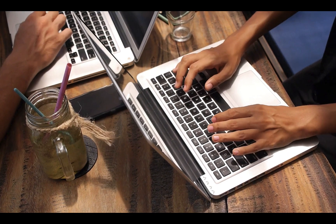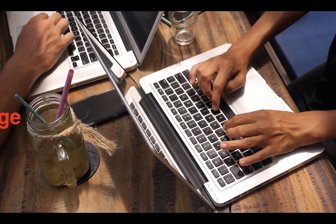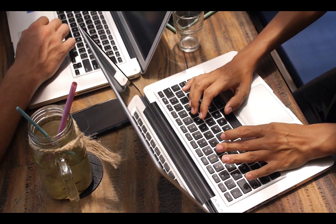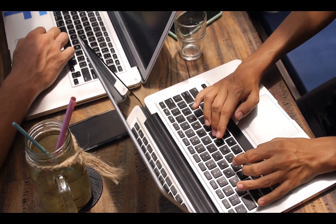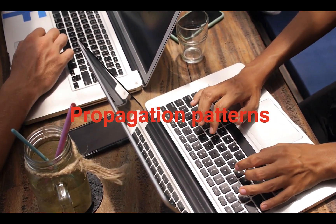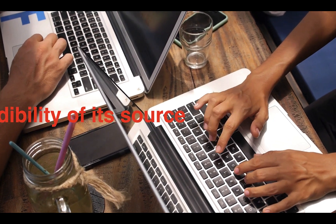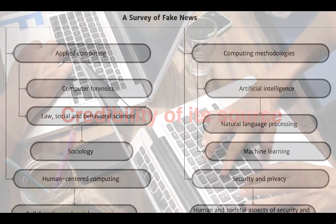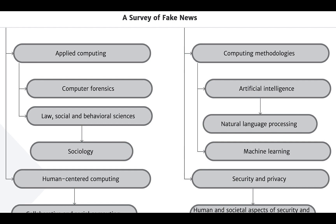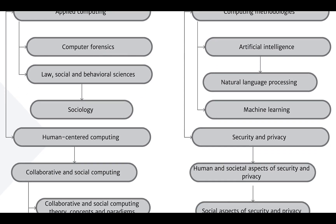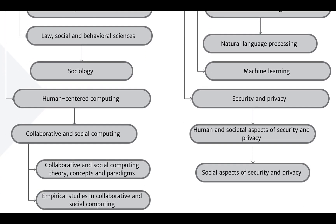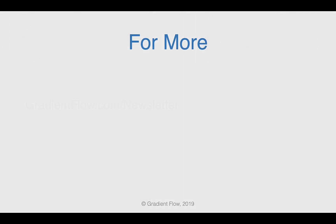Sin Yi Jo of Syracuse University has co-written a survey of fake news that covers four perspectives: the false knowledge it carries, its writing style, propagation patterns, and the credibility of its source. The survey identifies related fundamental theories across many topics and encourages further interdisciplinary research. To learn more, visit gradientflow.com/newsletter and subscribe. Thank you.